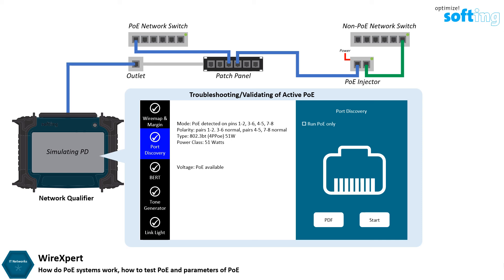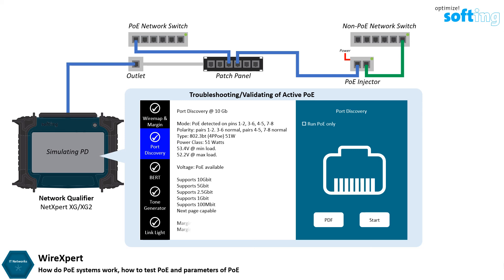If the tester is capable of performing a load test, it will simulate itself as a PD and place a load on the connection to check for the voltage that is applied and the actual power being delivered by the PSE. When doing a network test with a qualifier such as NetExpert XG, other features such as port discovery, determining which Ethernet speed the network supports, and loss margins of wire pairs can also be measured.